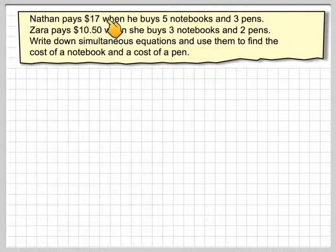Nathan pays $17 when he buys 5 notebooks and 3 pens. Sarah pays $10.50 when she buys 3 notebooks and 2 pens. Write down simultaneous equations and use them to find the cost of a notebook and the cost of a pen.